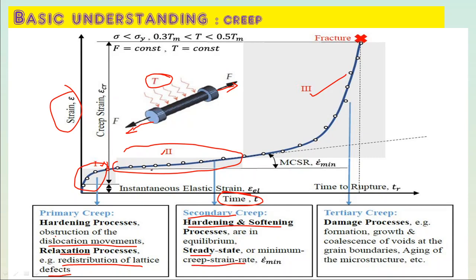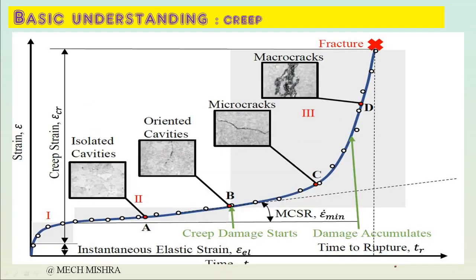In secondary creep the strain is almost constant. When time further passes and tertiary creep is entered, the damage process begins — for example, formation and growth of voids at grain boundaries and aging of the microstructure.